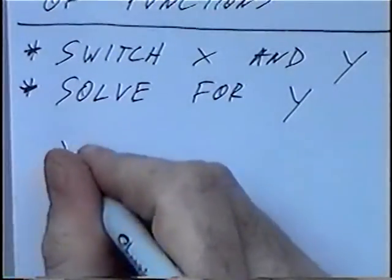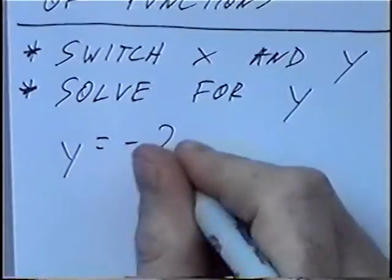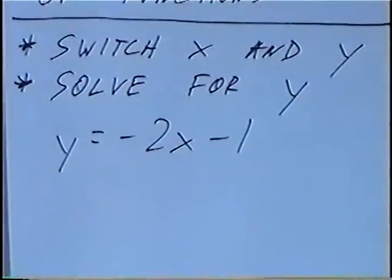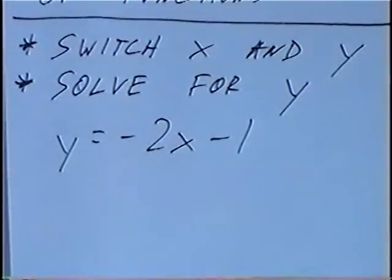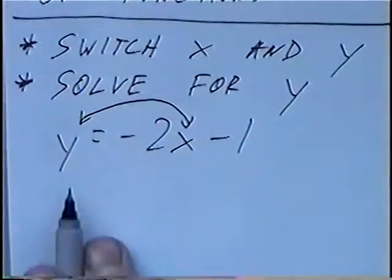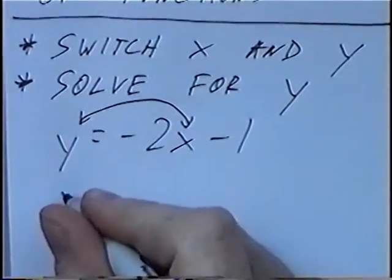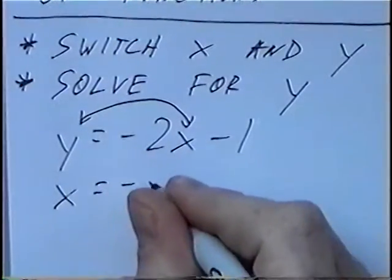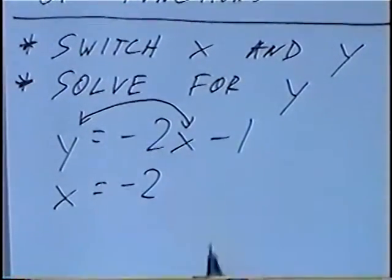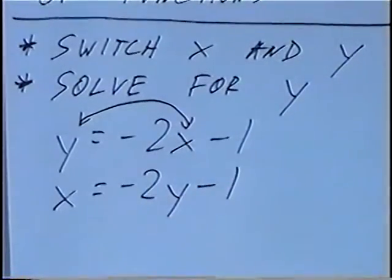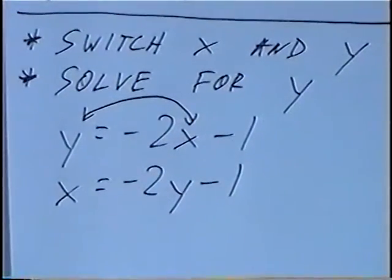First question: y equals negative 2x minus 1. To find the inverse, we switch the variables x and y. So instead of y equals, we'll put x in for y — so x equals negative 2, and instead of x, we replace it with y, giving us x equals negative 2y minus 1.